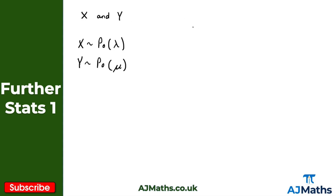So if we add these together, x plus y, the result is also a Poisson variable. If we say z is equal to x plus y, then z will be a Poisson variable and the parameter is going to be the sum of the individual parameters — so lambda plus mu. So that would be our new distribution.